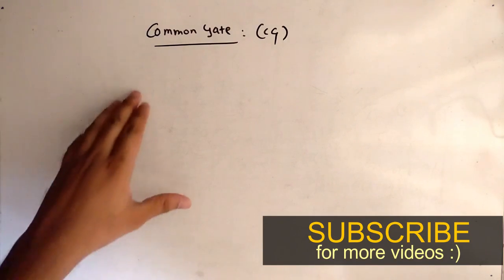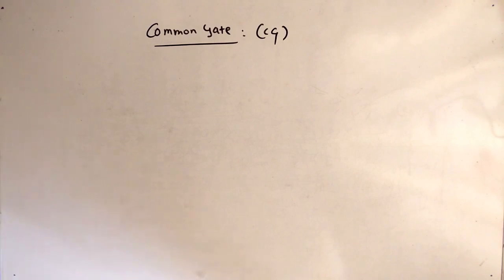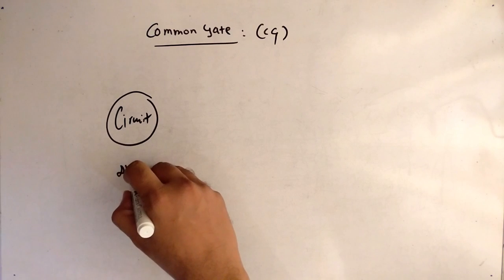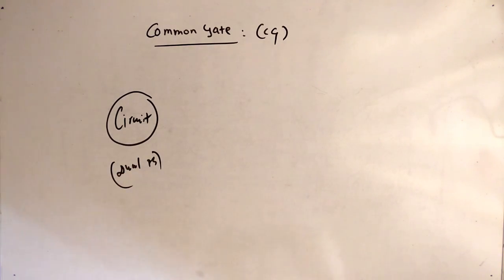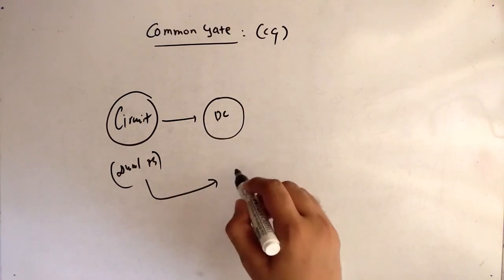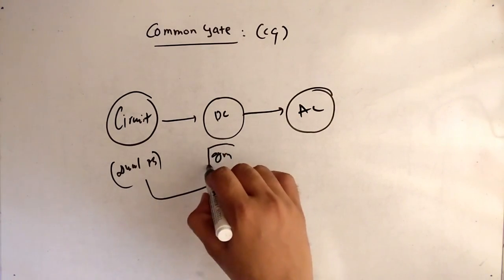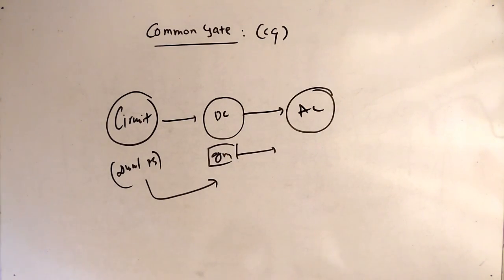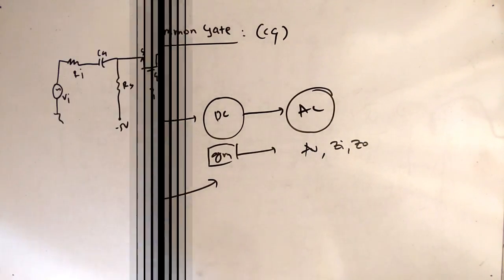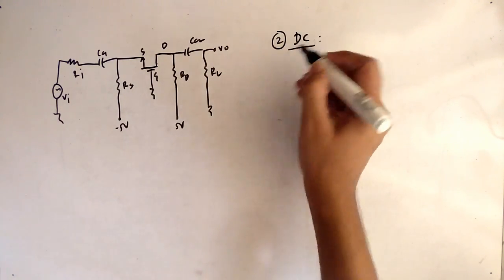In this video we will see the common gate configuration, the CG configuration. First we will look at the circuit, which uses a dual power supply, making the task more challenging. Then we will do DC analysis of that dual power supply circuit to find the term gm, so we can further go for AC analysis and use gm to find various terms like Av, Zi, and Zo.